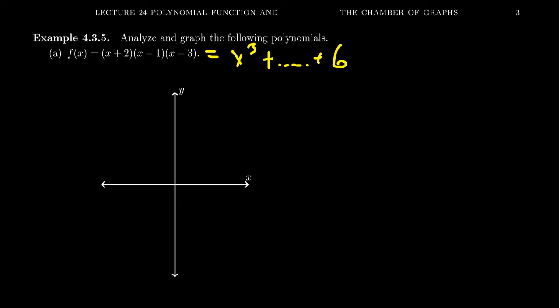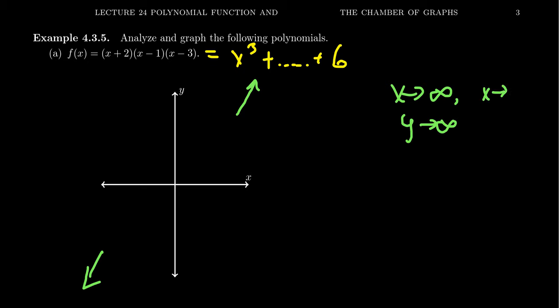The leading term is x cubed, so it points up on the right-hand side and down on the left-hand side. As x goes to infinity, y goes to infinity. And as x goes to negative infinity, y goes to negative infinity as well.